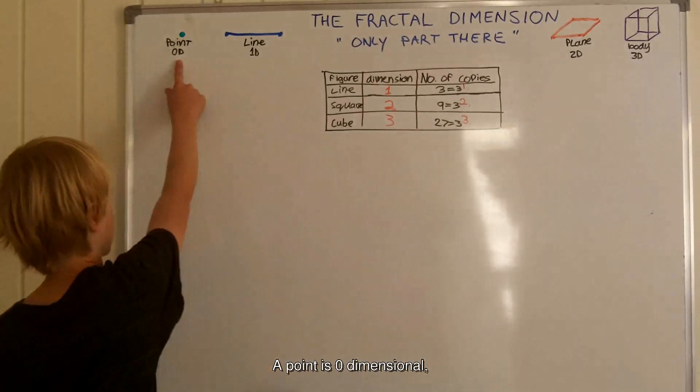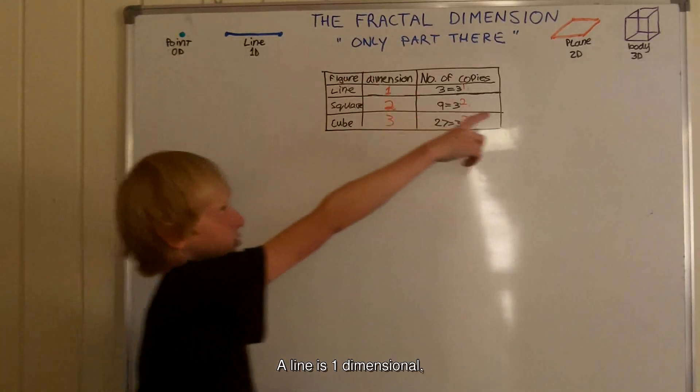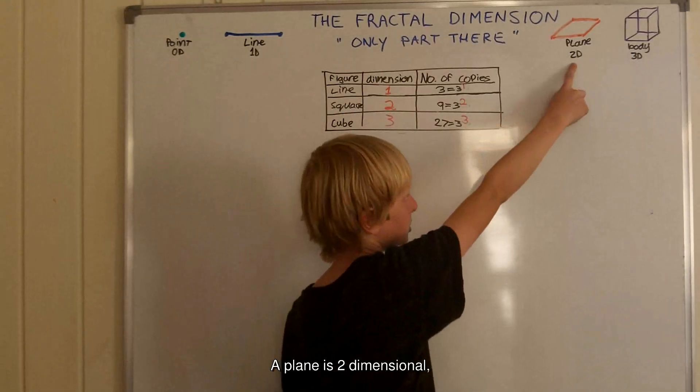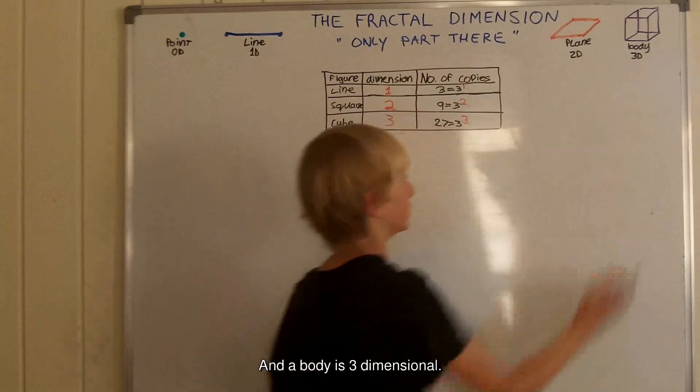A point is zero-dimensional, a line is one-dimensional, a plane is two-dimensional, and a body is three-dimensional.